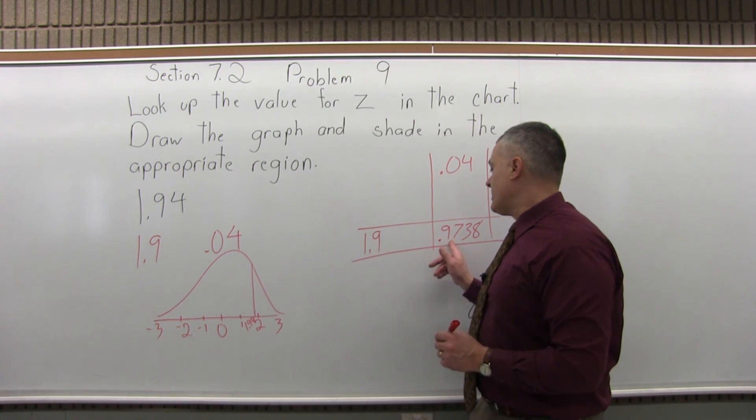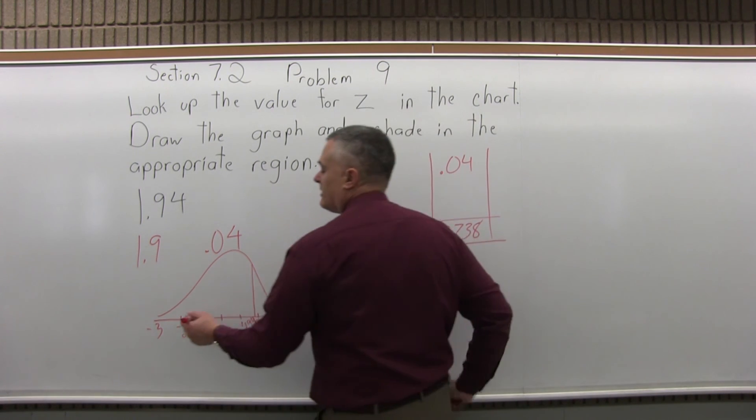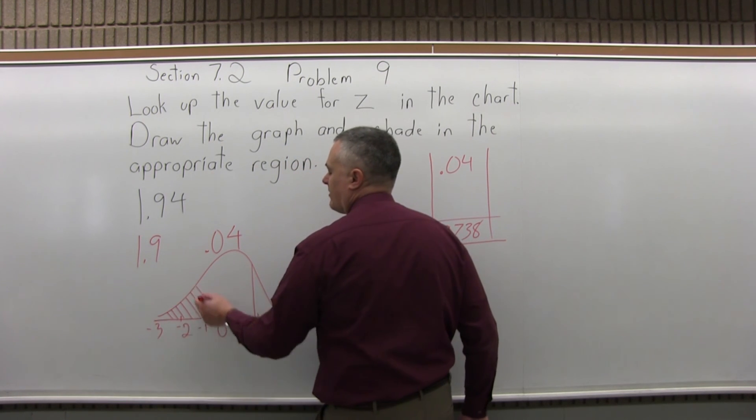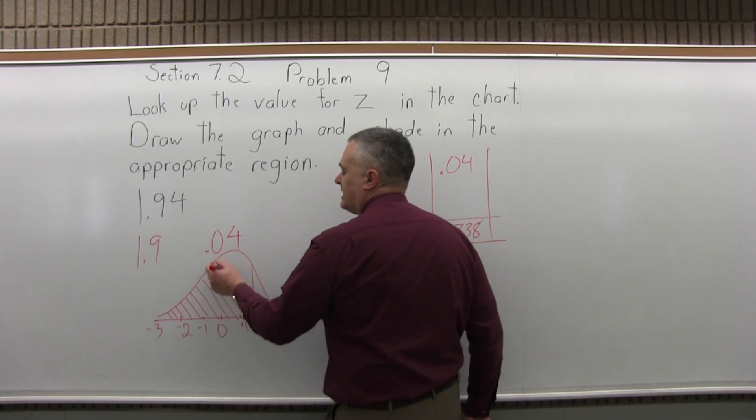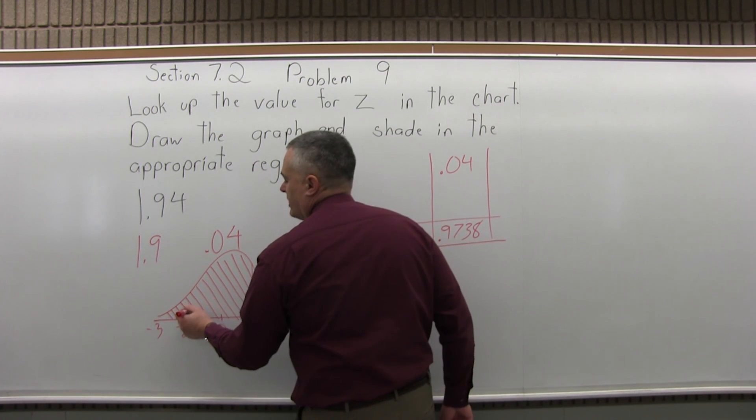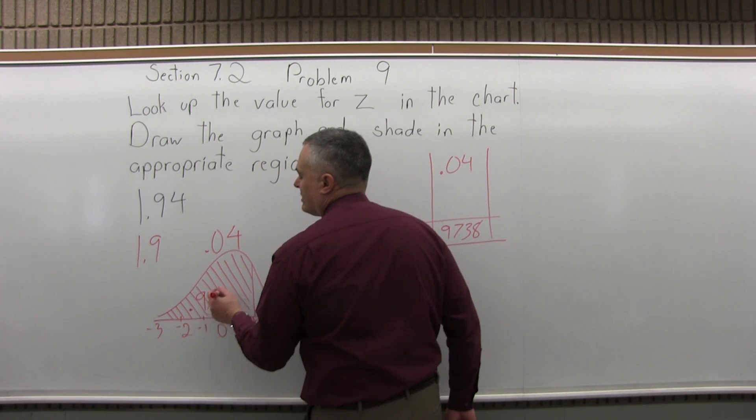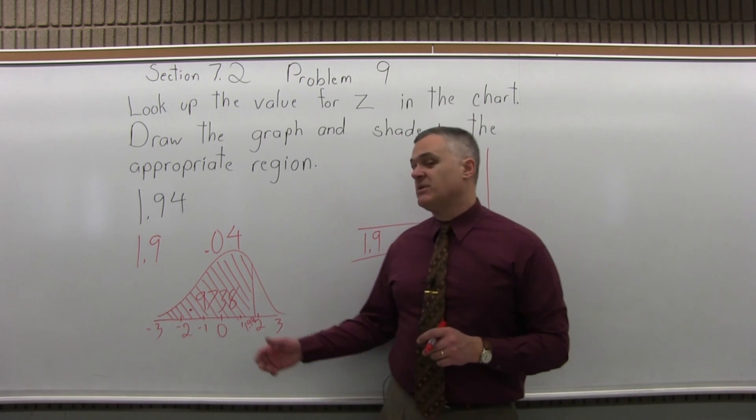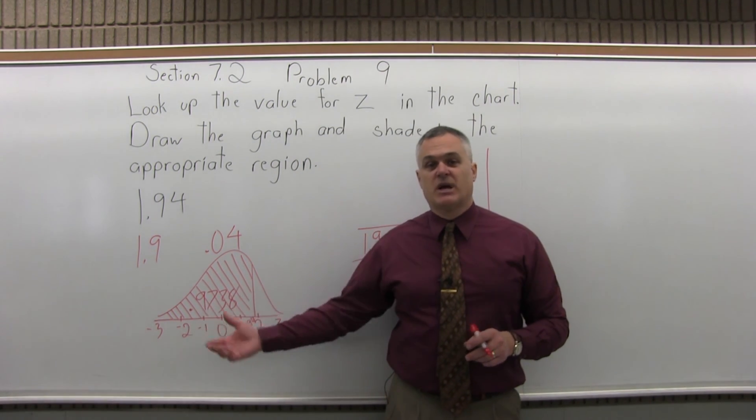And the number from the chart, .9738, is the probability of being less than that number on our graph, to the left of that number. So that's the area that I'll shade in. And I'll label it with 0.9738. So it's a little better than a 97% probability of being in the shaded region of my graph.